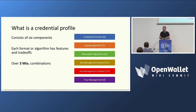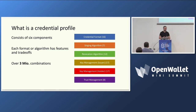A credential has key material — key material for the issuer, because you want to know whether the credential is authentic. And in most situations involving a natural person, you also want to make sure that only the legitimate holder can present the credential, which is typically done using key binding. David spoke about how those keys should go in a hardware module so you can't exfiltrate them. On top of that there is trust management: as a verifier, how do you determine whether you can trust that issuer for that kind of credential?